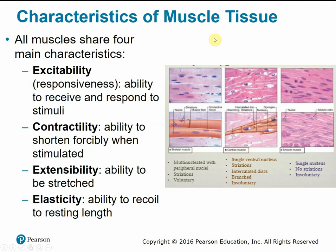All muscle tissue types share the same four main characteristics. First is excitability or responsiveness — muscle cells are able to receive and respond to stimuli in the form of neurotransmitters, action potentials, and electrical impulses. Second is contractility — they can shorten or contract when stimulated. Third is extensibility — the ability to stretch. Fourth is elasticity — they can stretch but will snap back and recoil to their normal resting length.